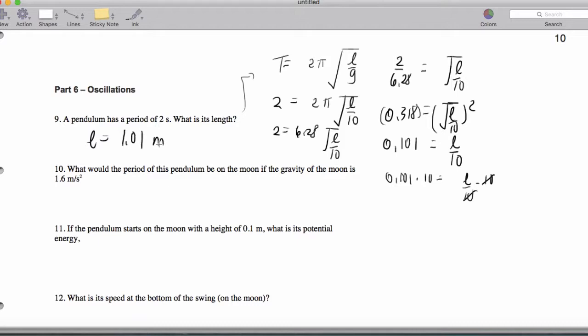Now we ask ourselves, what would the period of this pendulum be on the moon if the gravity of the moon is 1.6 meters per second squared? So that's T is 2π square root of L over g. So 2π square root of L over g where L is 1.01 and g is now 1.6.